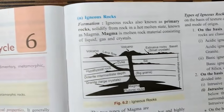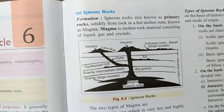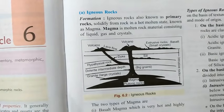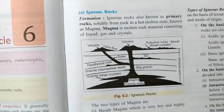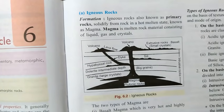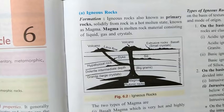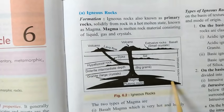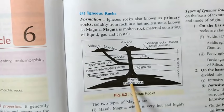Let's start with the first rock: igneous rocks. The first question is how igneous rocks are formed. Igneous rocks are also called primary rocks because they are directly formed by the solidification of molten magma. The molten material inside the earth is called magma. As you can see in the figure, a volcano is shown here.